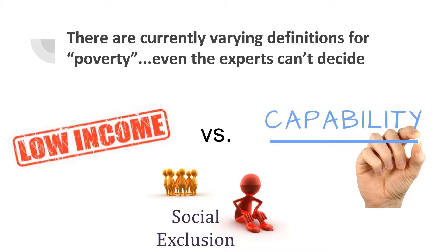Meanwhile, analyst Amartya Sen argues that poverty is more so the deprivation of a person's capabilities and capabilities to succeed. Even others have argued that poverty has to do with a state in which someone is socially excluded from their peers.